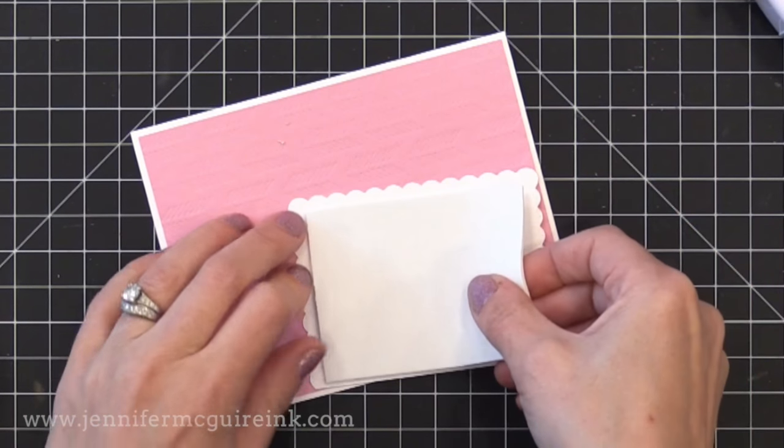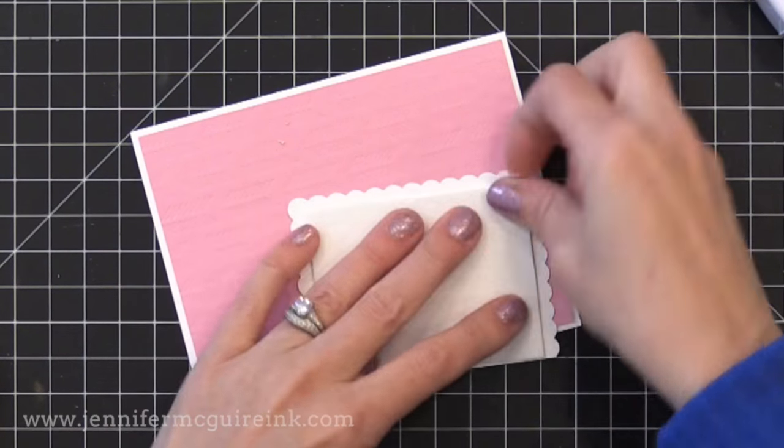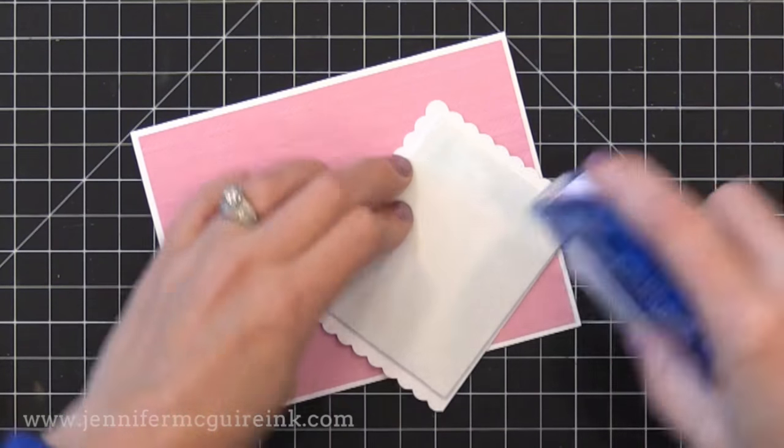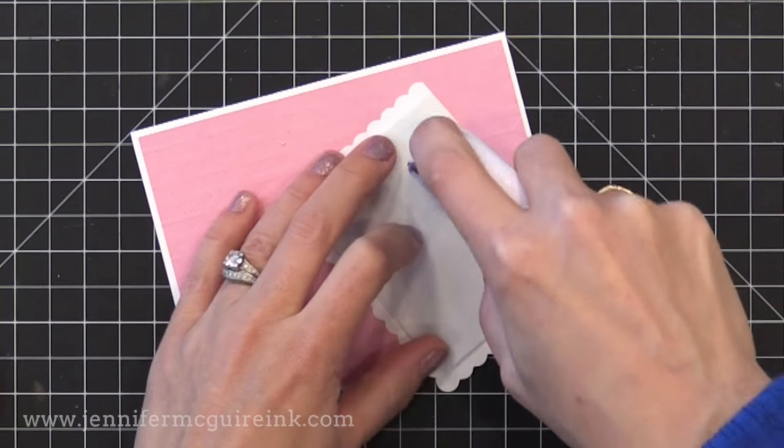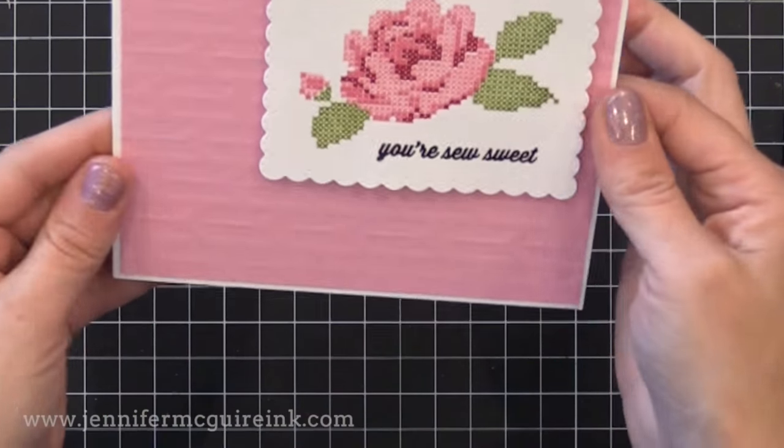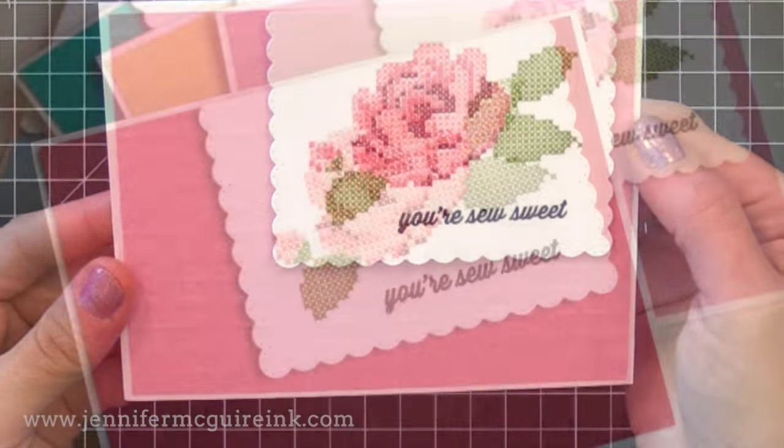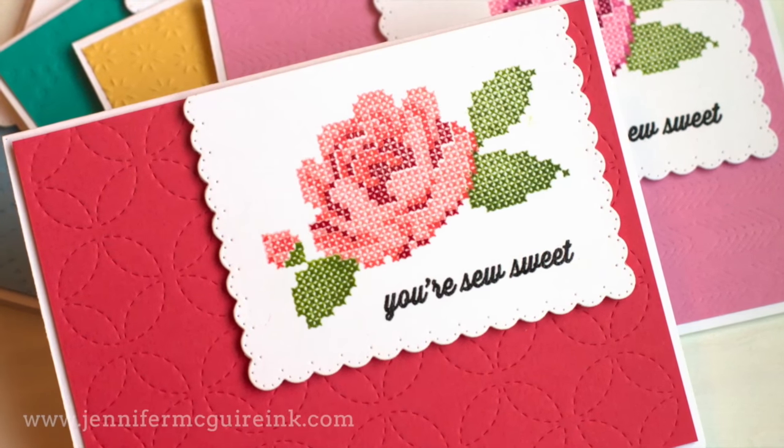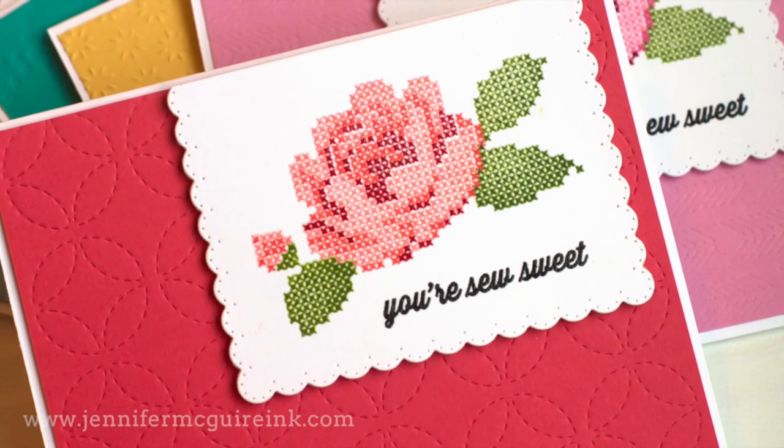Okay, now to glue this together, I put some adhesive on the back of our stamped panel. And then I put a piece of white craft foam. This will give it a nice, even raised dimension. And it won't get crumbled going through the mail. So I'm just gluing that towards the top edge of the card. And I decided to not do any embellishments. Because I wanted to keep the focus on that cross stitch rose. It's such a beautiful rose.